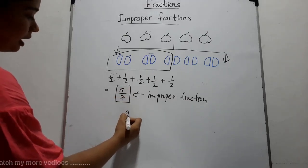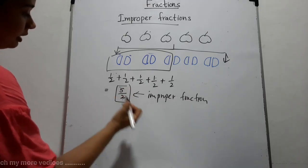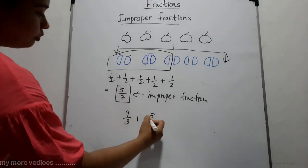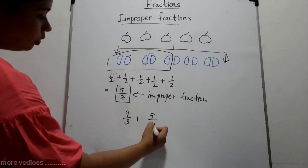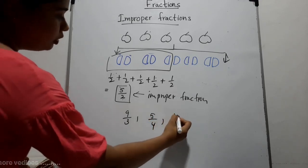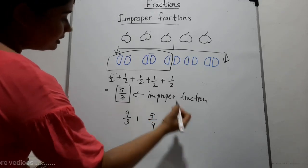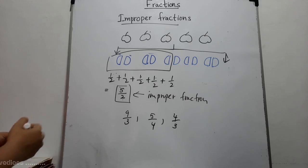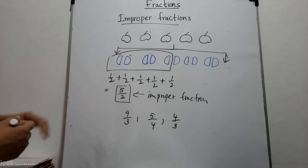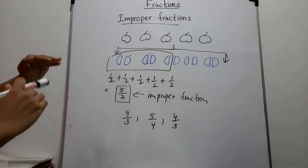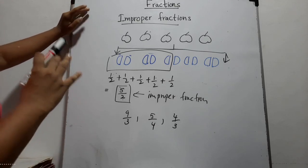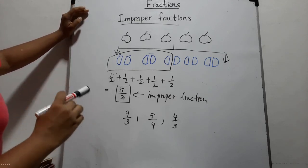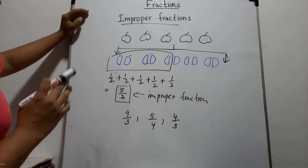Here are some examples: nine-thirds, five-fourths, four-thirds. I think you now have some knowledge about mixed numbers and improper fractions.